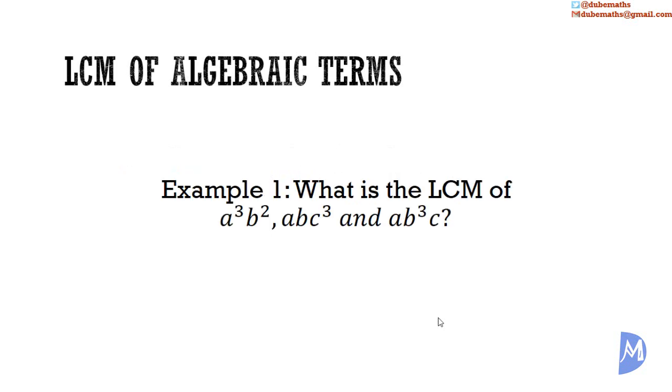For example, what is the LCM of a³b², abc³, and ab³c? There are three factors: a, b, and c. The highest power of a is a³, the highest power of b is b³, and the highest power of c is c³. Thus, the LCM is a³b³c³.